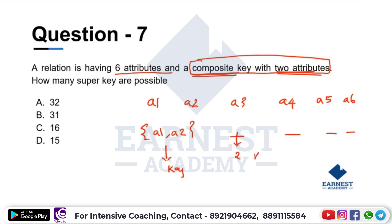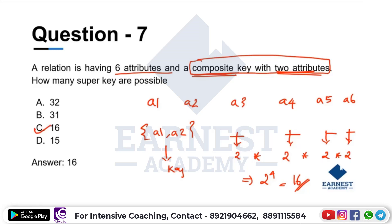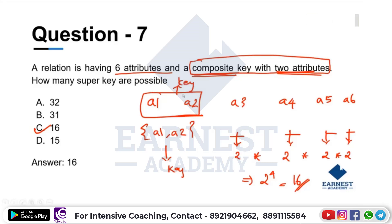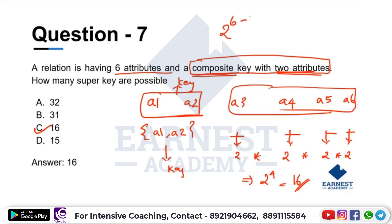A3 or the combination of A3, A4 or the combination of A4, A5 or the combination of A5 — adding all combinations together gives a total of 2 raised to 4, which equals 16. So the answer is 16. The number of super keys is 2 raised to (n minus the key attributes), which equals 2 raised to 1 for a single key attribute setup.